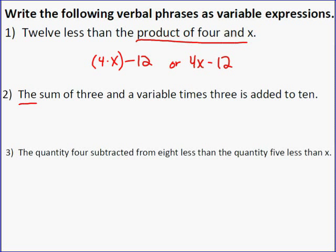For number two, it says the sum of three and a variable times three is added to ten. Again, whenever you see sum, the sum means parentheses, so we're going to do the sum. We're going to do whatever is right after that. The sum is three and a variable, so three plus x or x plus three, it doesn't matter how you do it. Three plus x, right? That's the sum of three and a variable.